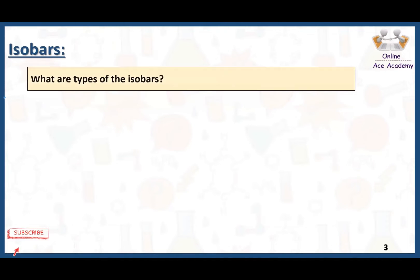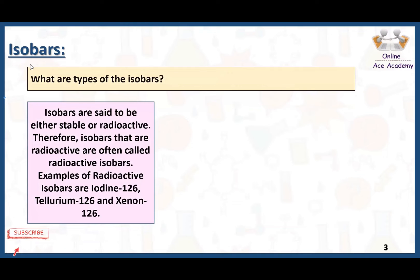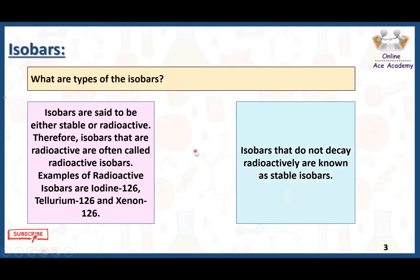There are two main types of isobars: stable and radioactive. Isobars that are radioactive are called radioactive isobars — for example, iodine, tellurium and xenon all have different atomic numbers but their mass number is the same, which is 126. On the other hand, isobars that do not decay radioactively are called stable isobars — for example, calcium, potassium and argon all have the same mass number of 40 but different atomic numbers.